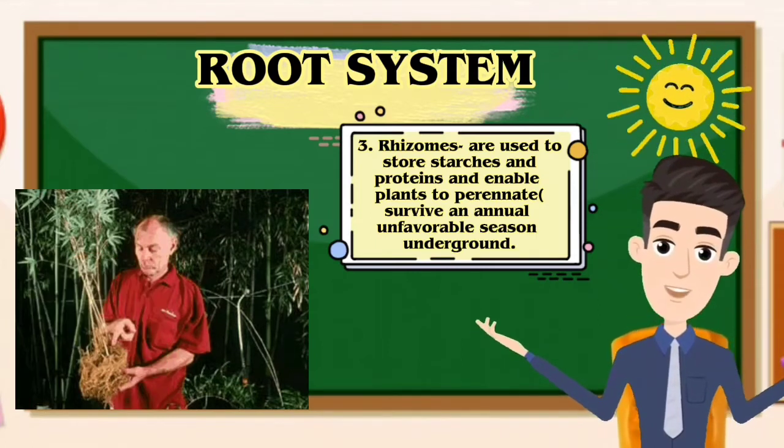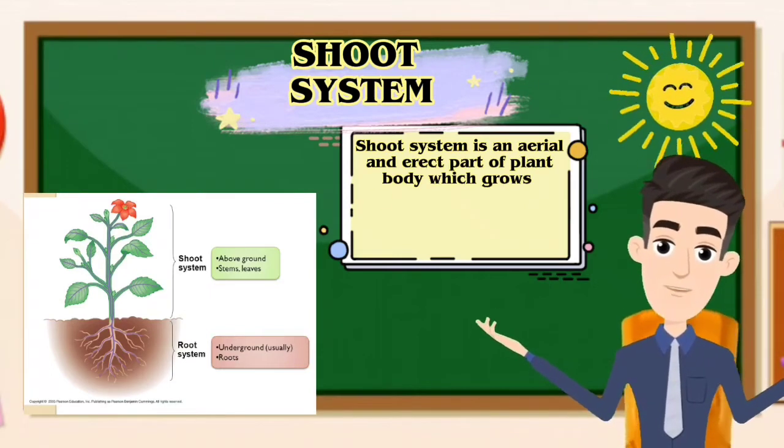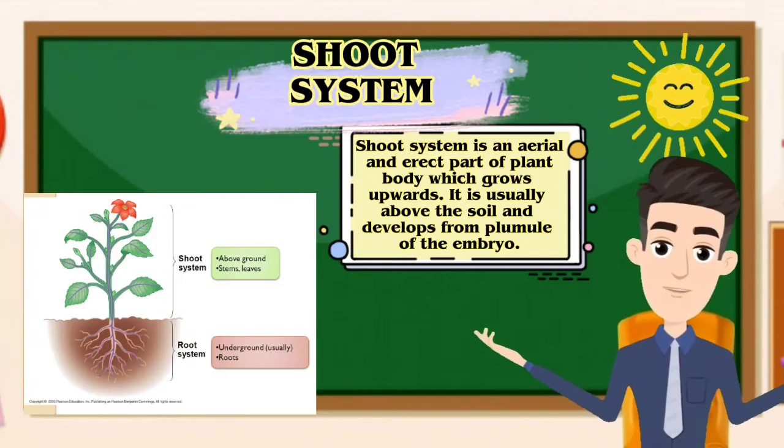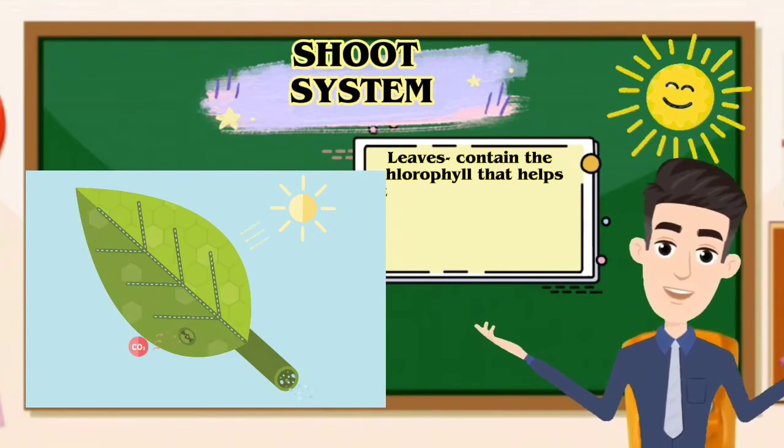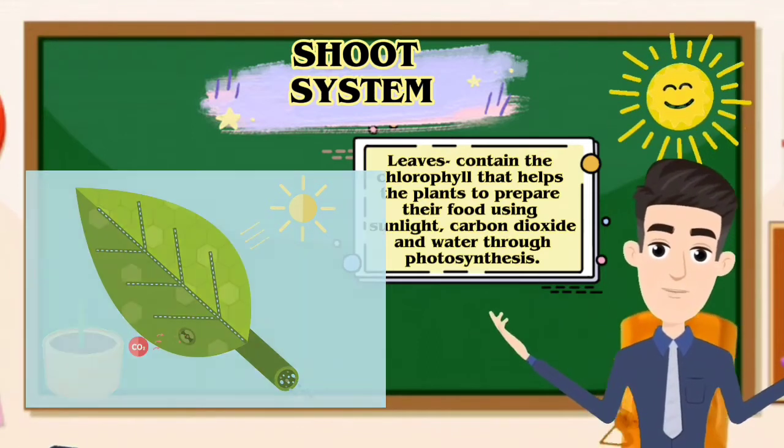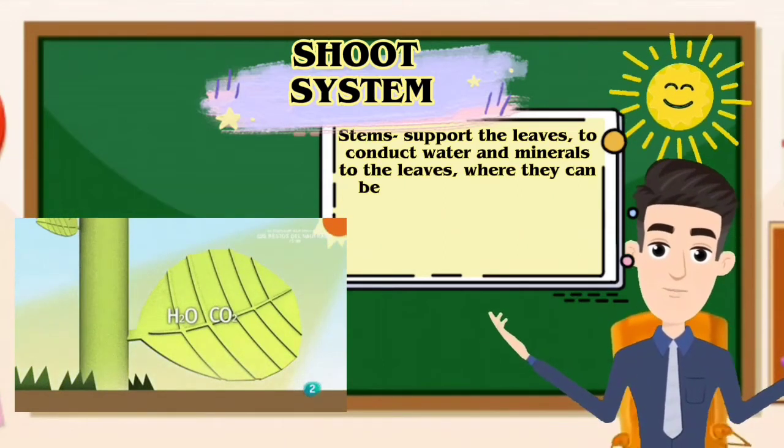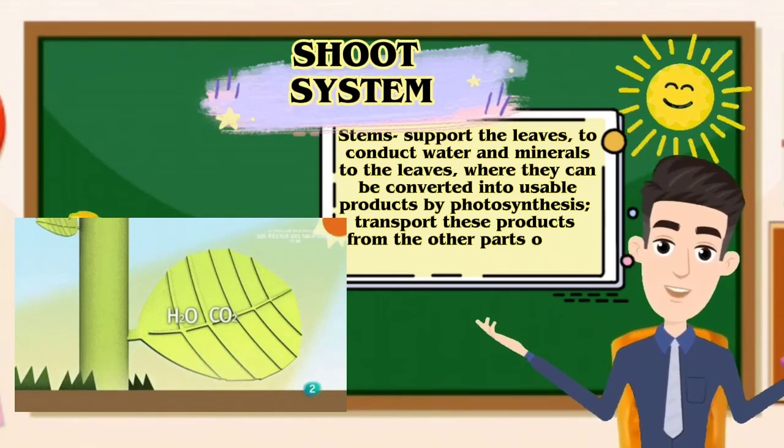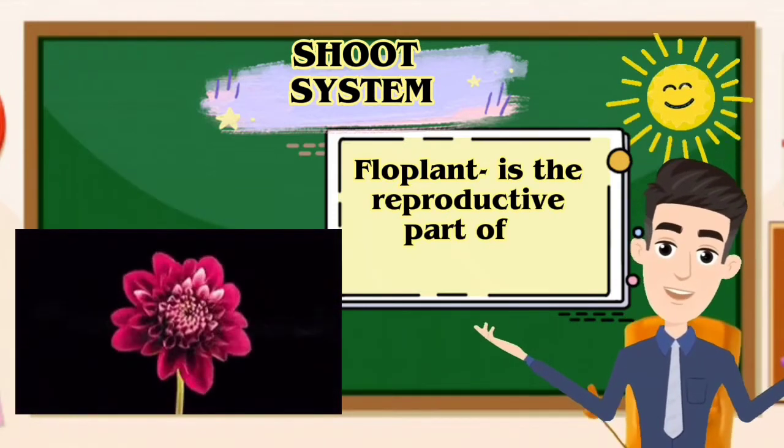The shoot system is an aerial and erect part of the plant body which grows upwards. It is usually above the soil and develops from the plumule of the embryo. It includes the following: one, leaves contain chlorophyll that helps the plant prepare their food using sunlight, carbon dioxide, and water through photosynthesis. Number two, stems support the leaves to conduct water and minerals to the leaves where they can convert it into usable products by photosynthesis and to transport these products from the leaves to the other parts of the plant. Three, flowers are the reproductive part of the flowering plant. And lastly, the fruit, which is the main feature of the flowering plant.